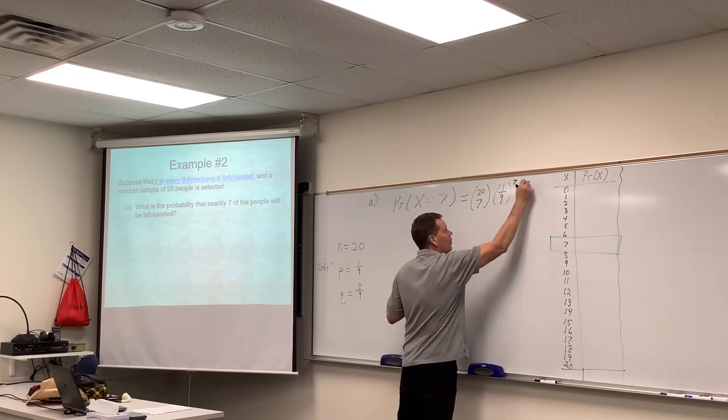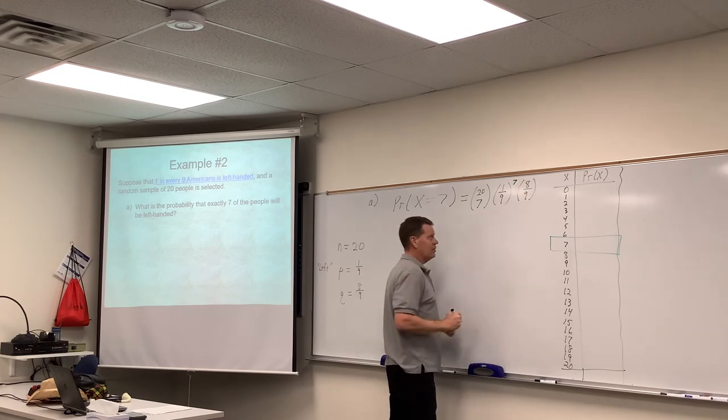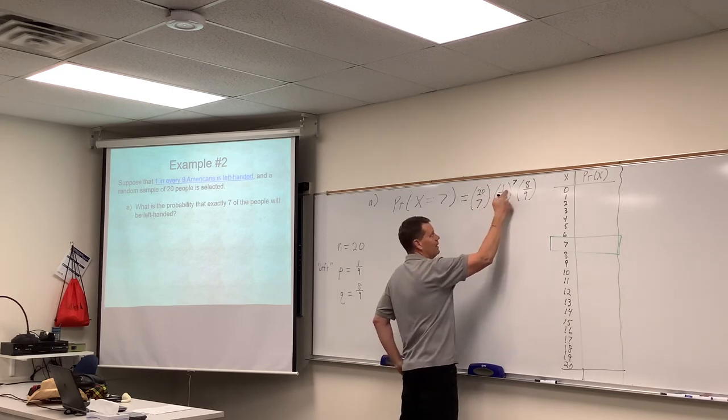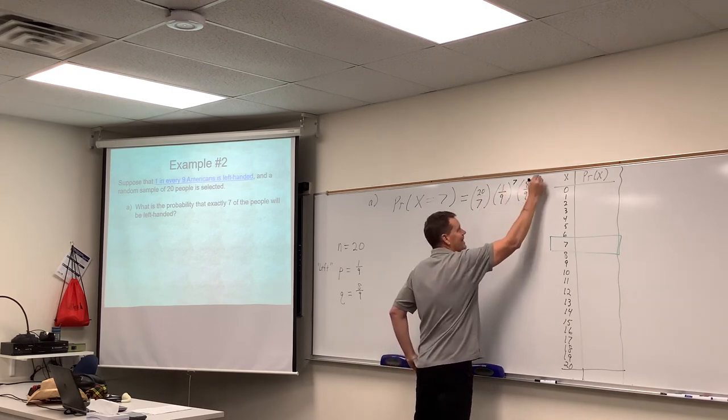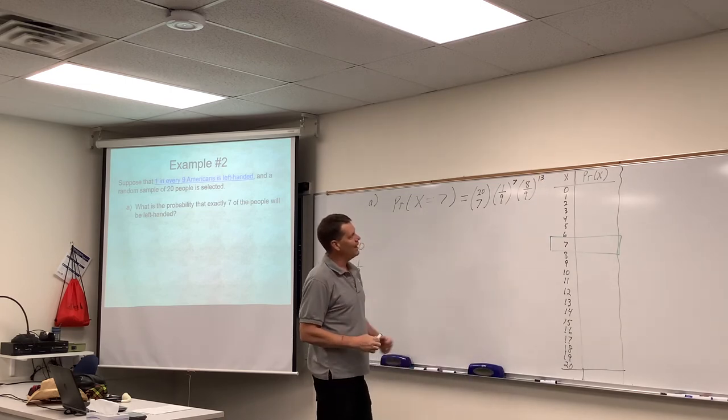And therefore, the eight-ninths, the right-handed people, let's just say. If we pull 20 people and seven of them are left-handed, wouldn't that be 13 of them are right-handed? So that would be eight-ninths to the 13th power.